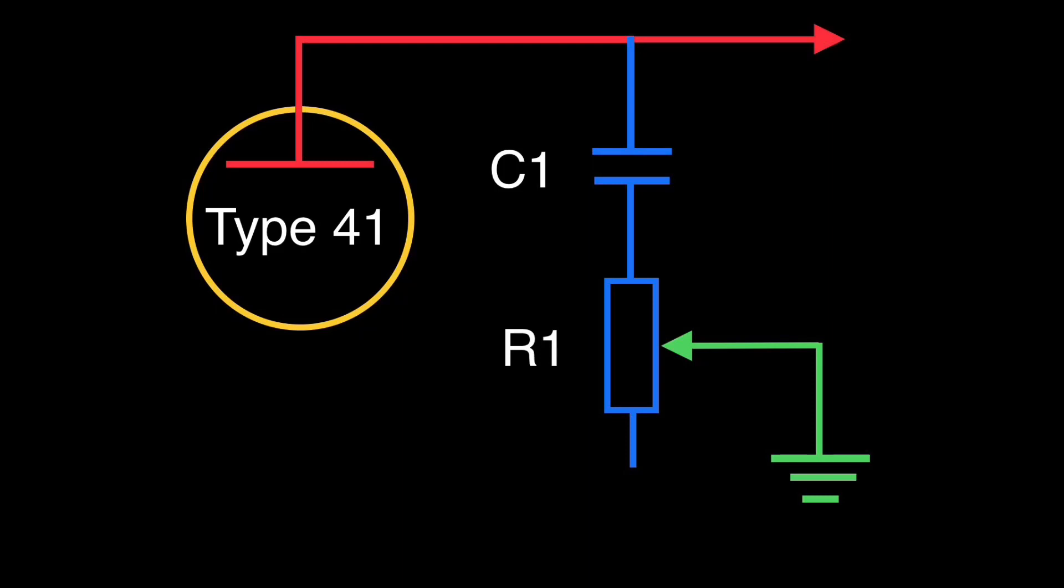Looking down beyond that, C1 and R1 along with the green ground symbol actually creates the low-pass filter.